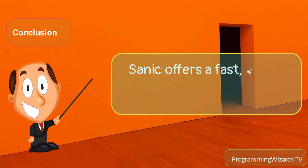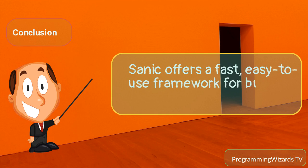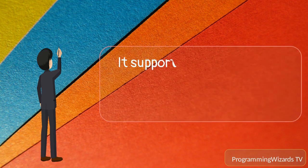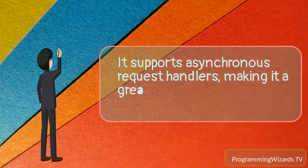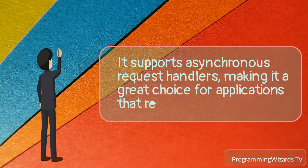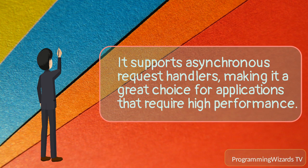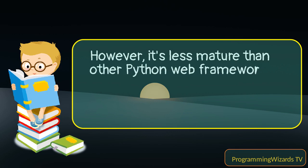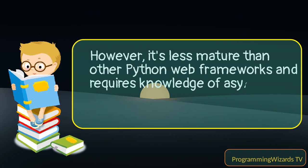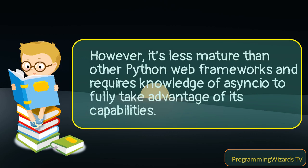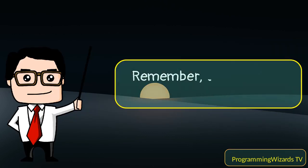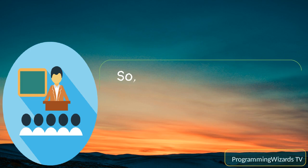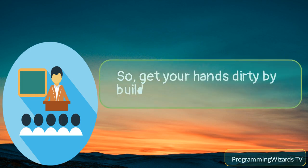Sanic offers a fast, easy-to-use framework for building Python web applications. It supports asynchronous request handlers, making it a great choice for applications that require high performance. However, it's less mature than other Python web frameworks and requires knowledge of asyncio to fully take advantage of its capabilities. Remember, the best way to learn is by doing — so get your hands dirty by building something with Sanic.